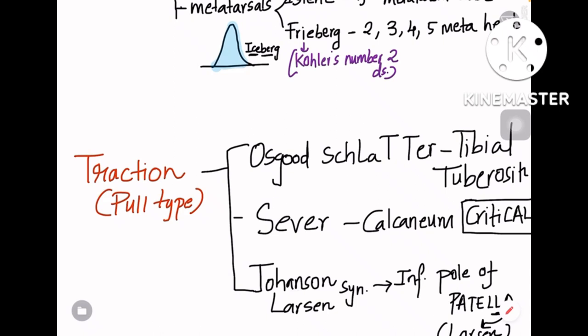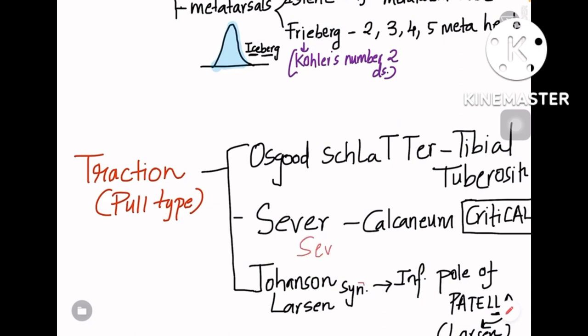First, Osgood-Schlatter disease — note that 'Schlatter' has two T's. It is for the tibial tuberosity, so remember T and T: Osgood-Schlatter for tibial tuberosity. Coming to Sever's disease, remember it like 'severe.'